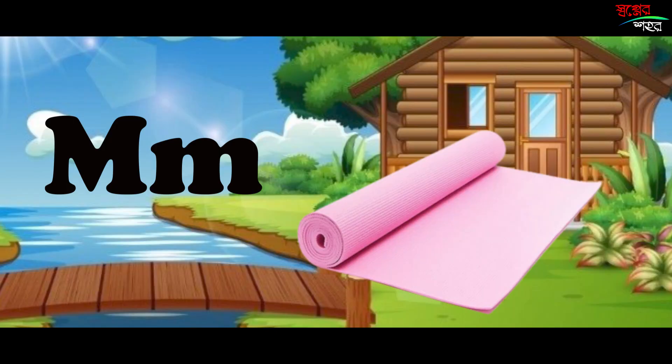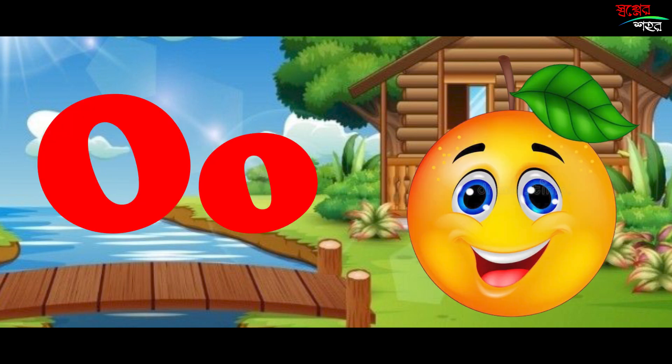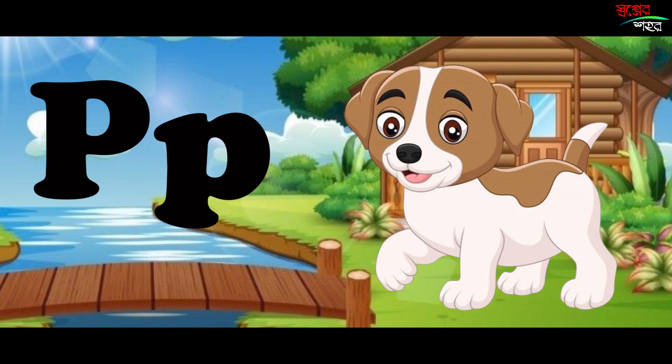M is for Mat, M-M-Mat. N is for Net, N-N-Net. O is for Orange, O-O-Orange. P is for Pet, P-P-Pet.